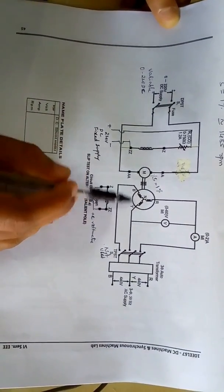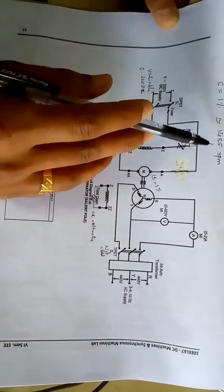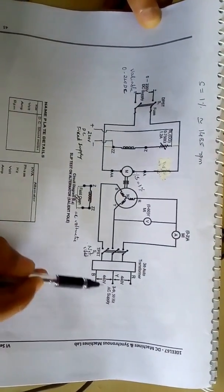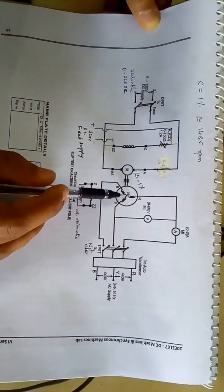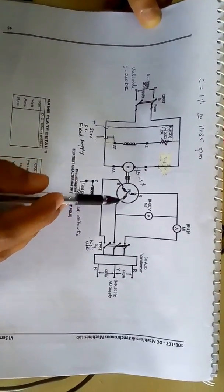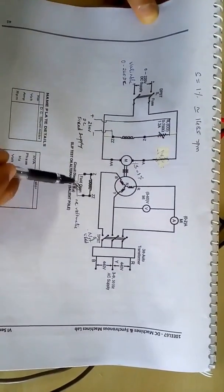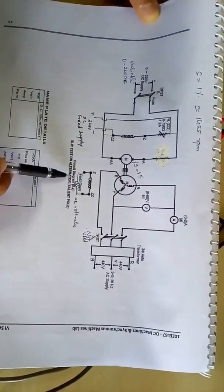the alternator at 1485 rpm, we should make sure that the three-phase supply given to the RYB (that is stator) should be in off position, that is S2 should be in off position, and field should be in open position.